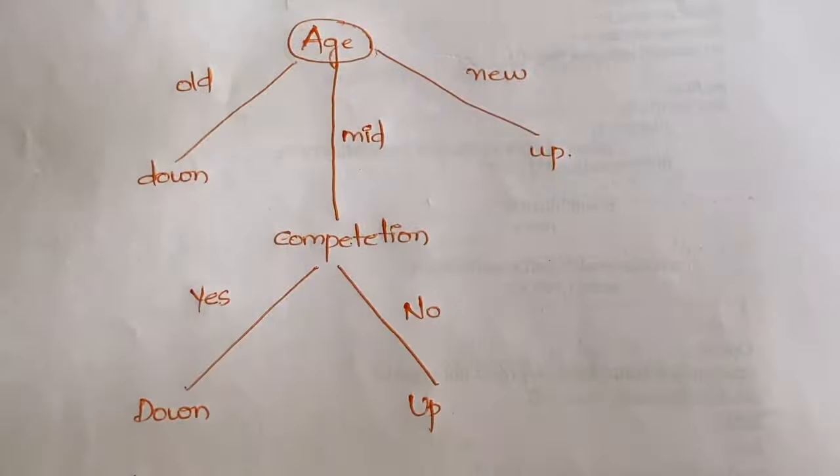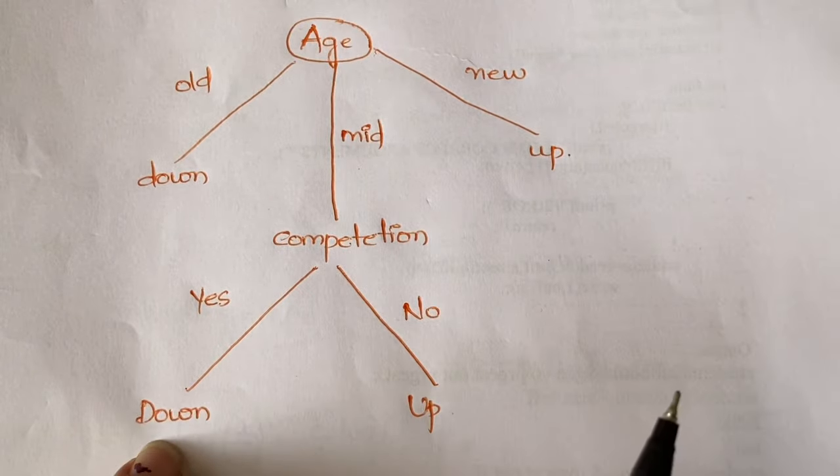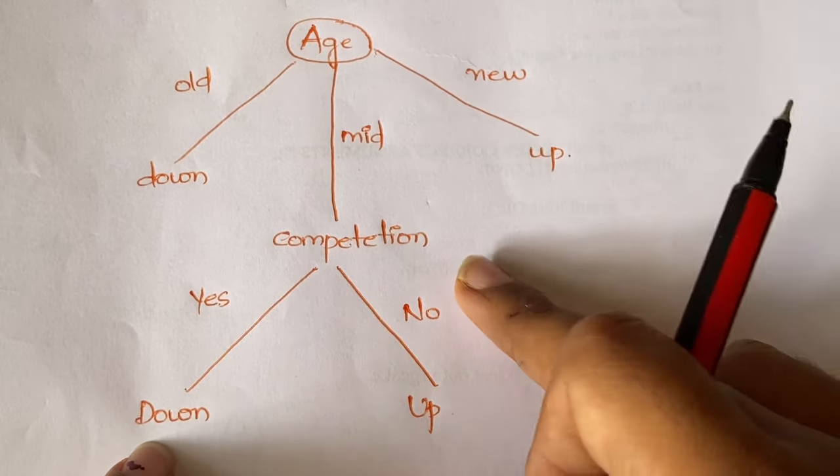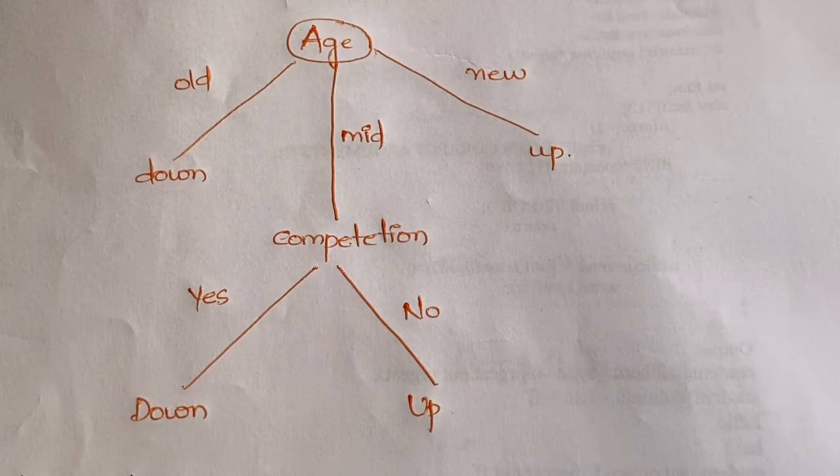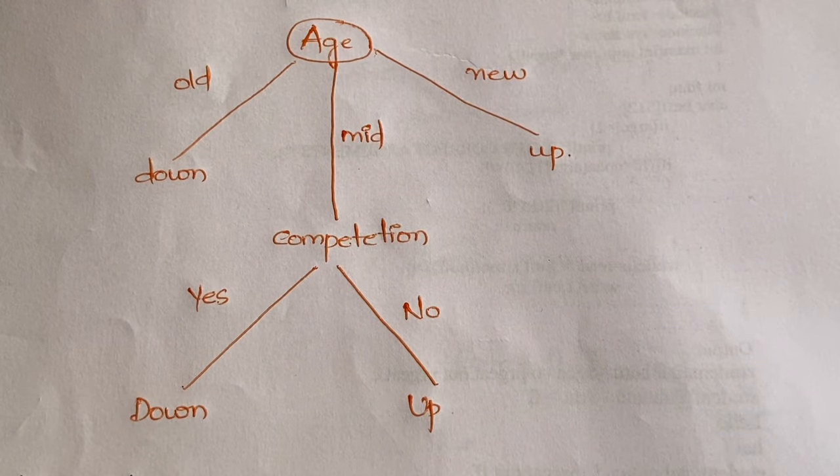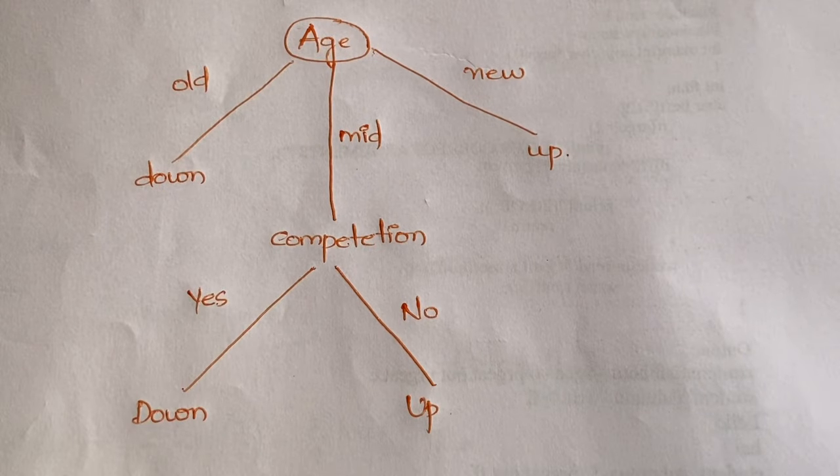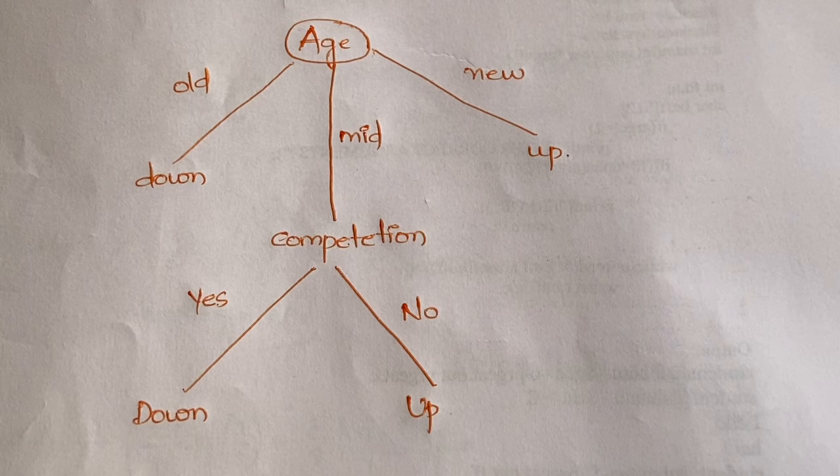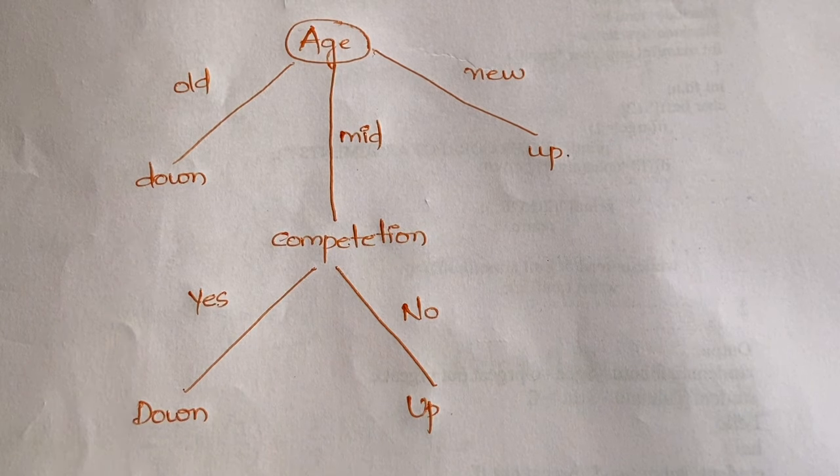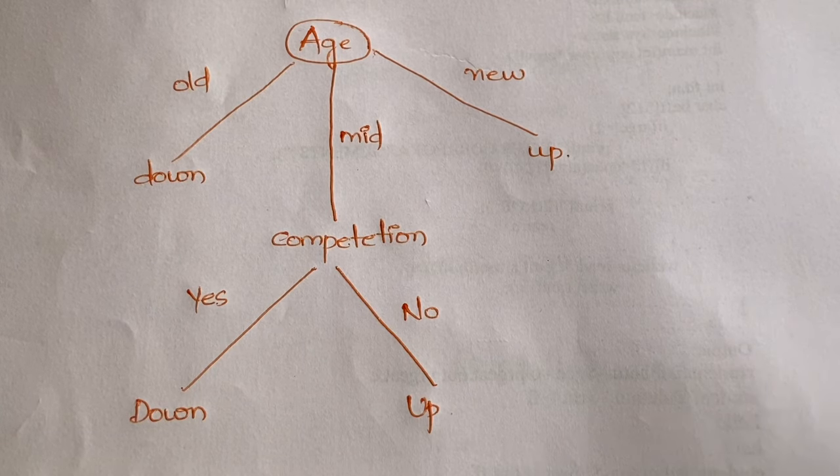Based on that, you classify: if competition is yes, the profit goes down; if competition is no, the profit goes up. We have taken age as the root node, and based on that we have classified. All old age is classified into down profit, mid age is classified into down or up based on the competition, and all new age is classified into up.